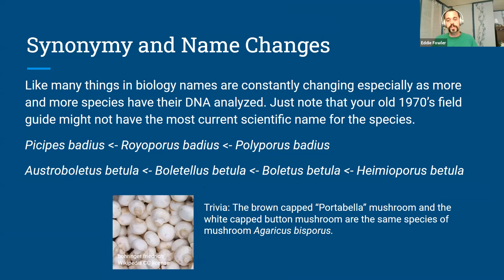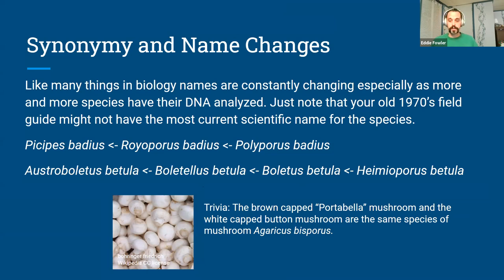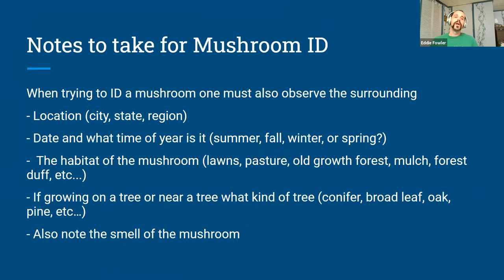A little bit of trivia: the brown-capped portobello mushrooms and the white button mushrooms at the store are basically the same mushroom — Agaricus bisporus. It's just a marketing thing. They are exactly the same species; they just have different morphologies in how they present themselves.